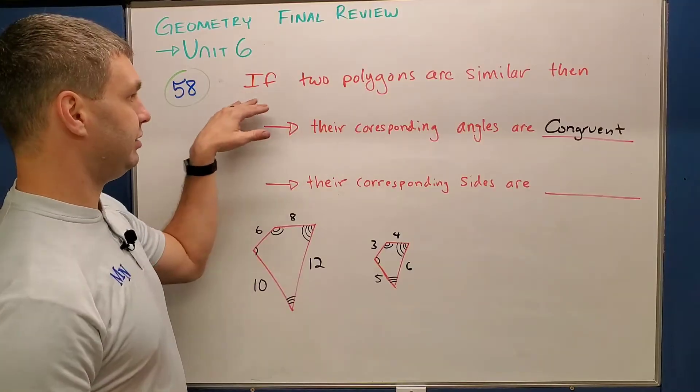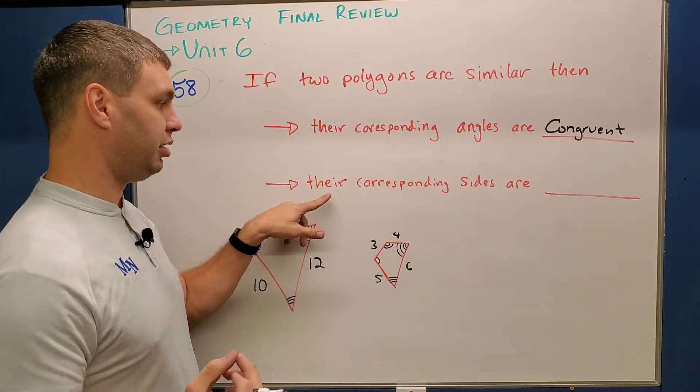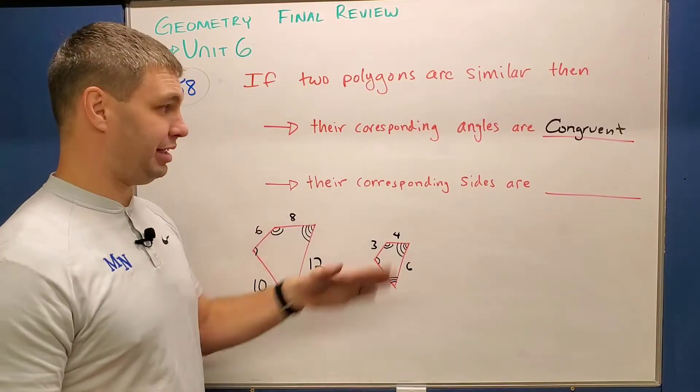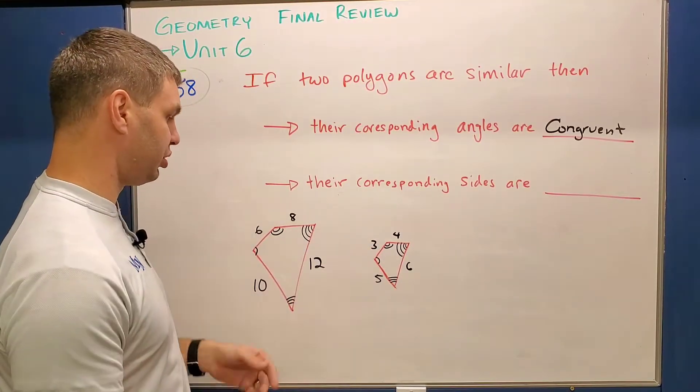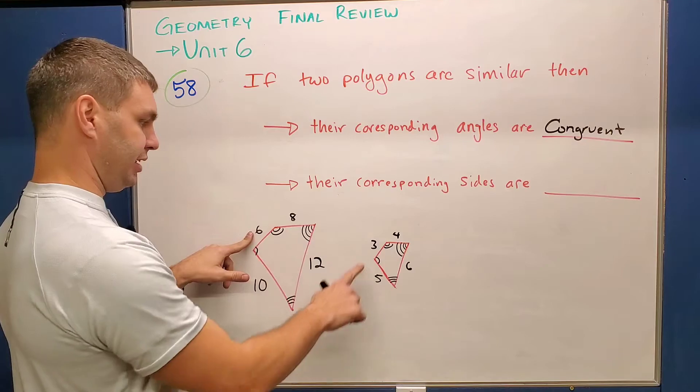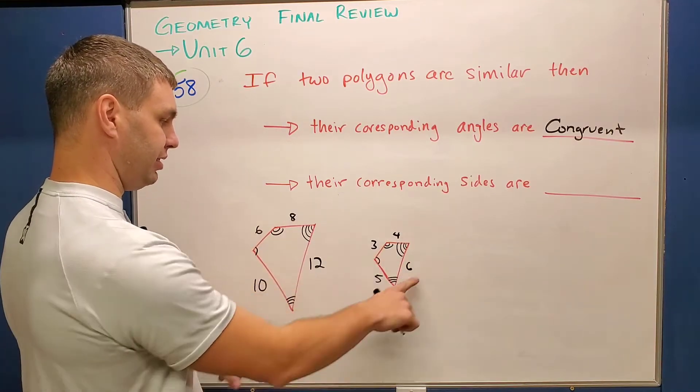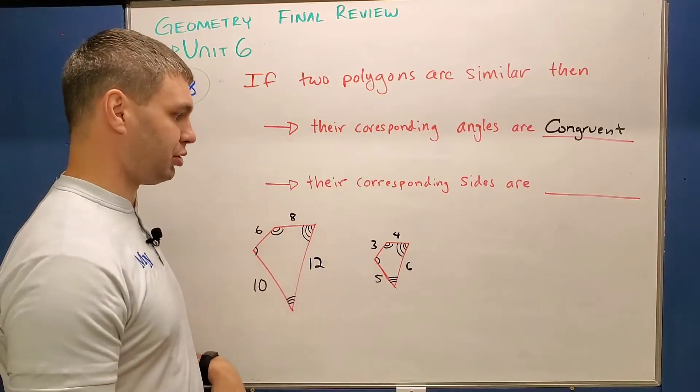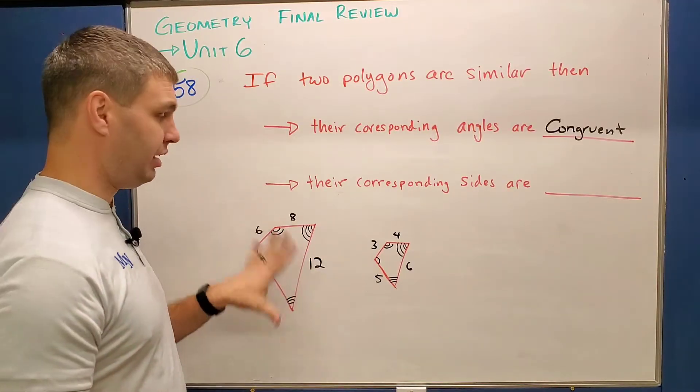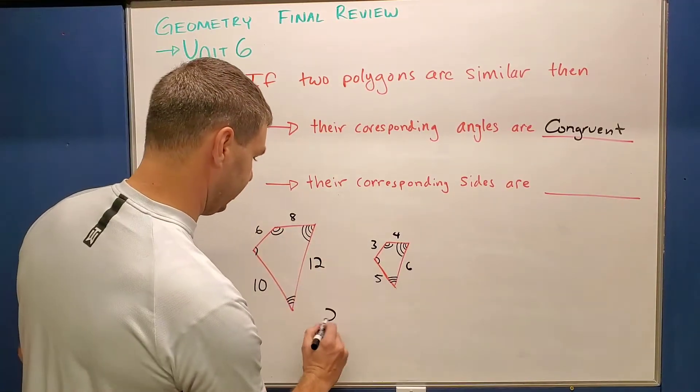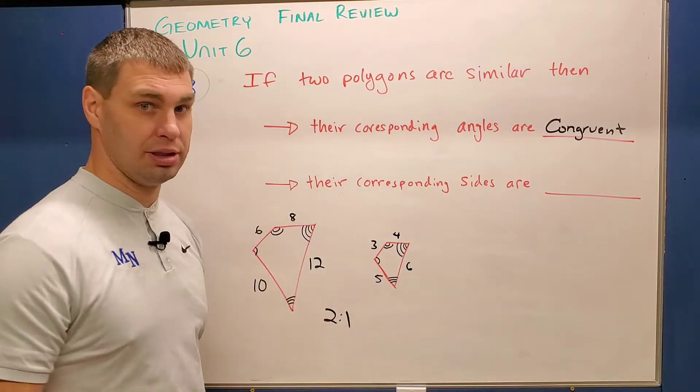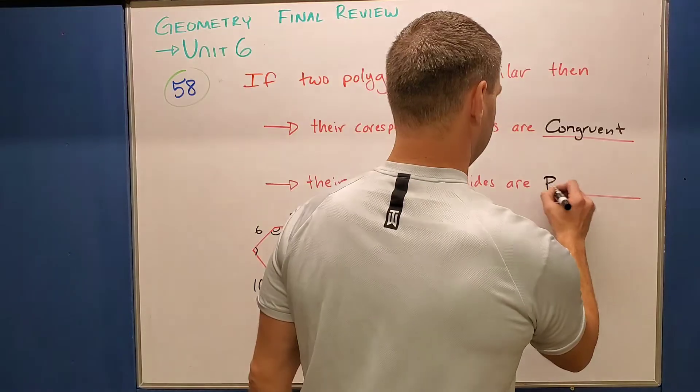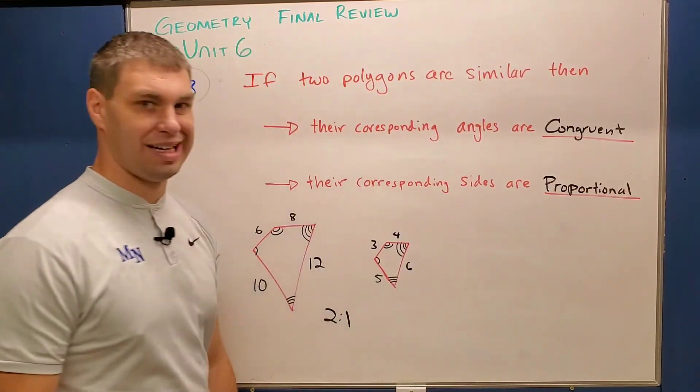Now likewise, if two polygons are similar, then their corresponding sides are not congruent. What we need to say instead is that they are proportional. If I were to write all these out: six and three, eight and four, twelve and six, ten and five, this one is double. So that's going to be proportional. You could say it's a ratio of two to one. So we're going to say they are proportional, their sides are proportional.